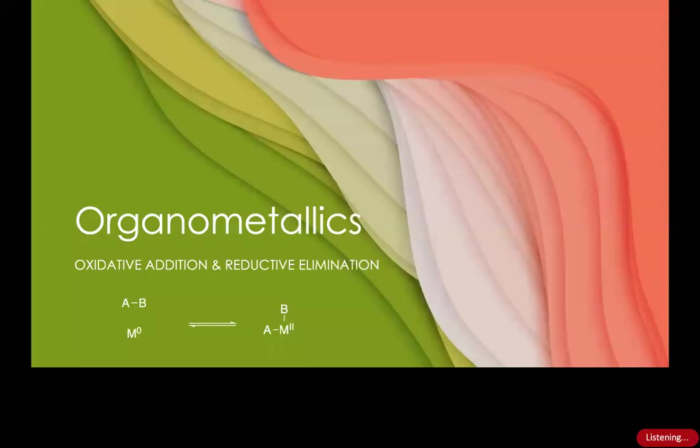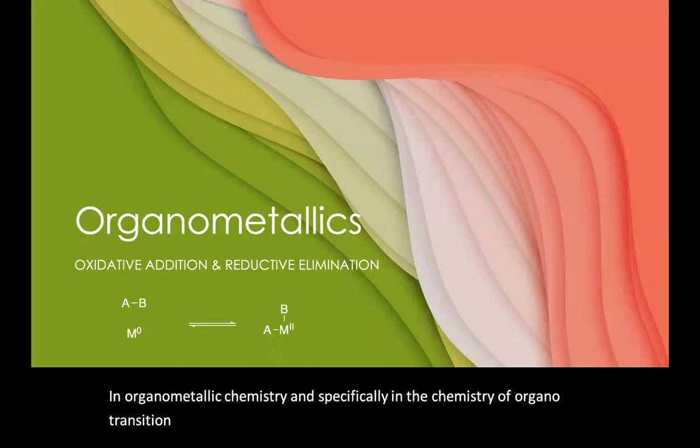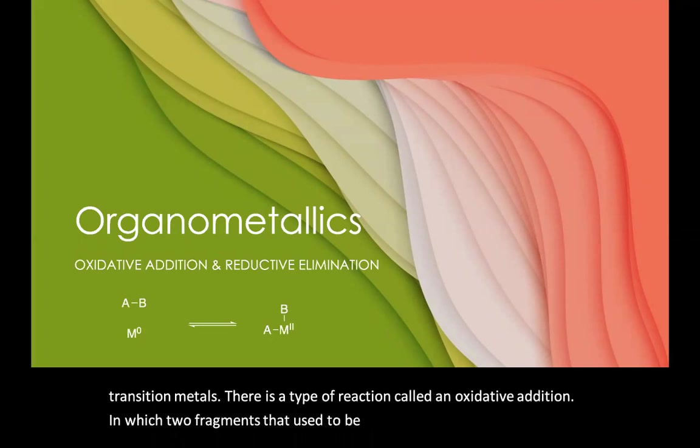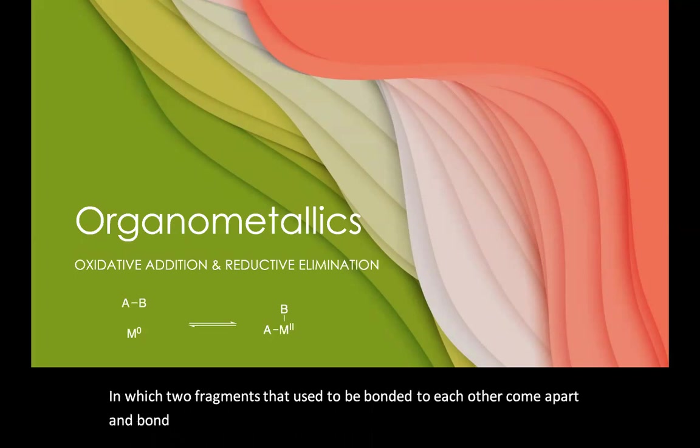In organometallic chemistry and specifically in chemistry of organotransition metals, there's a type of reaction called an oxidative addition in which two fragments that used to be bonded to each other come apart and bond instead individually to a transition metal.